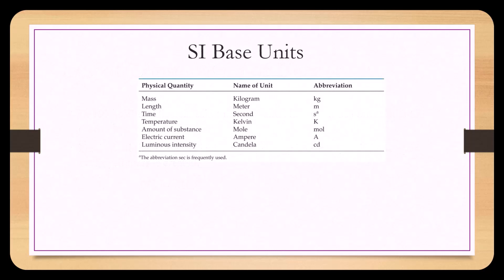Scientists came up with a measuring system that could be universally understood. The International System of Units, also called SI units, are a globally agreed basis of measurement — a sort of globally understood language that expresses units of measurement. The SI base units are: kilogram for mass, meter for length, second for time, kelvin for temperature, mole for amount of substance, ampere for electric current, and candela for luminescent intensity.